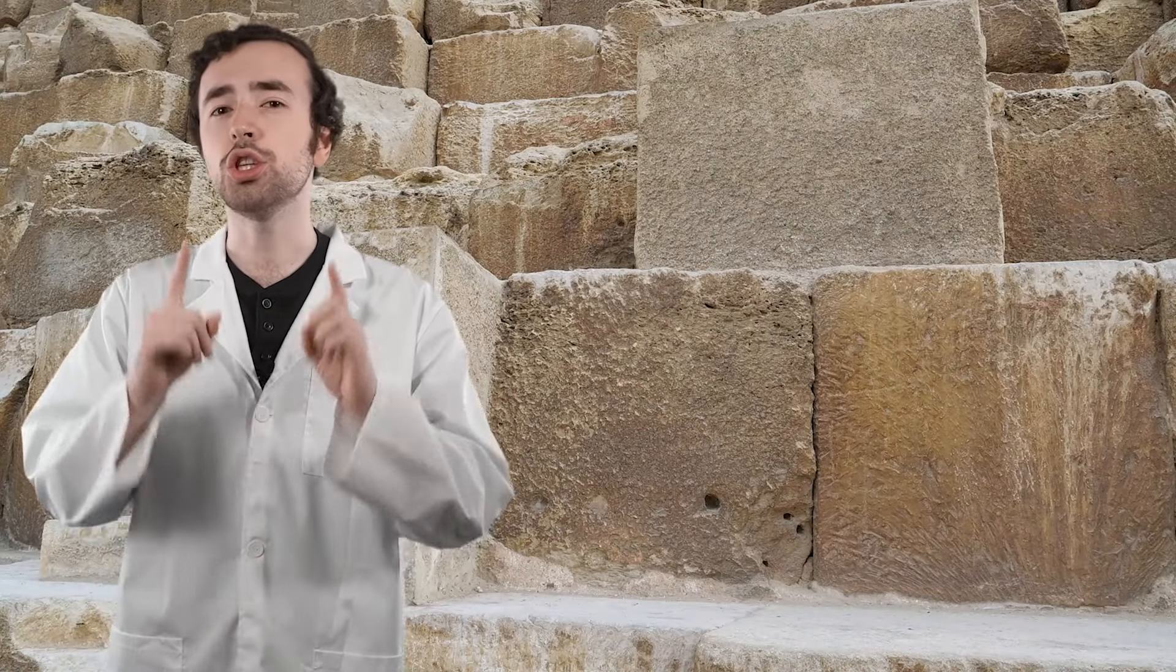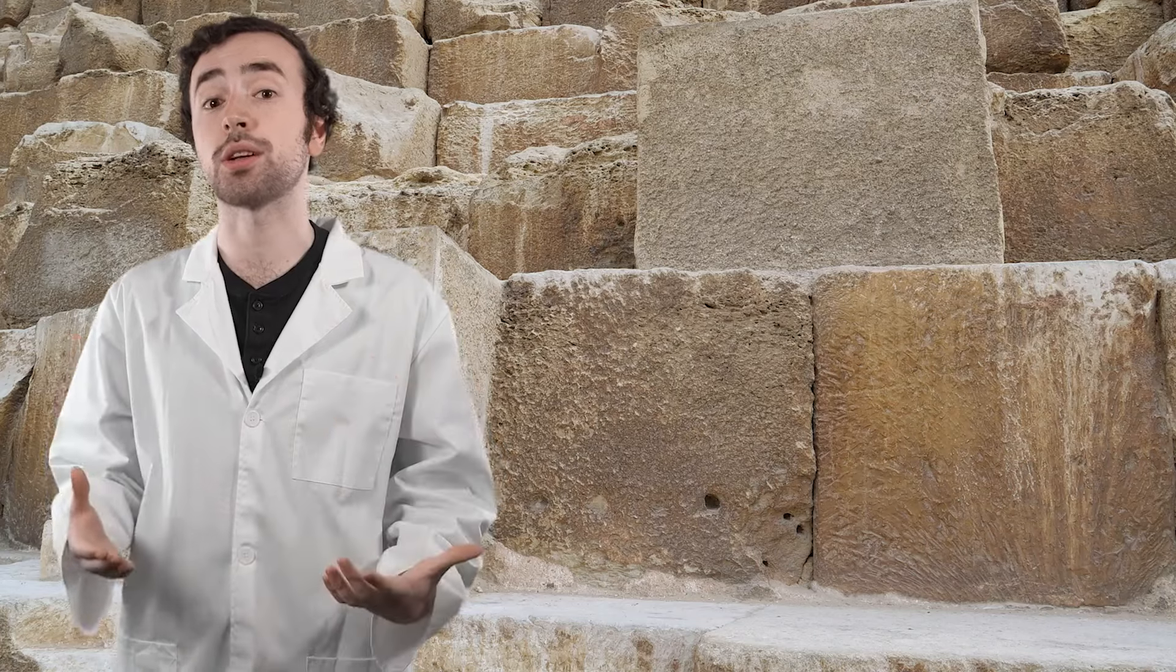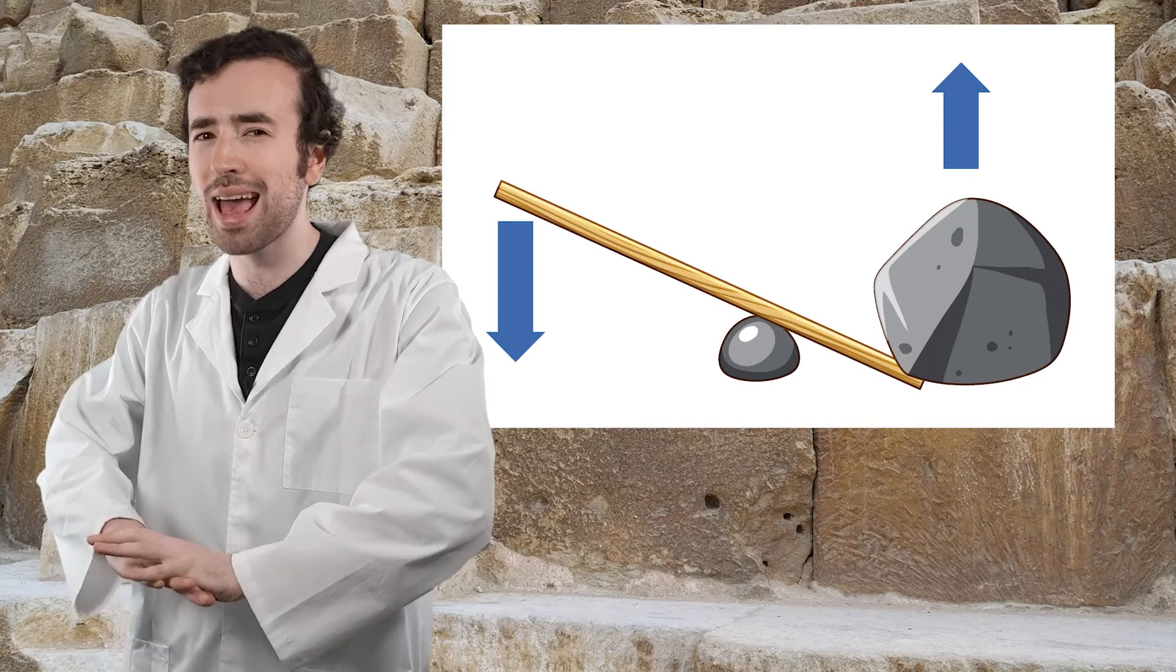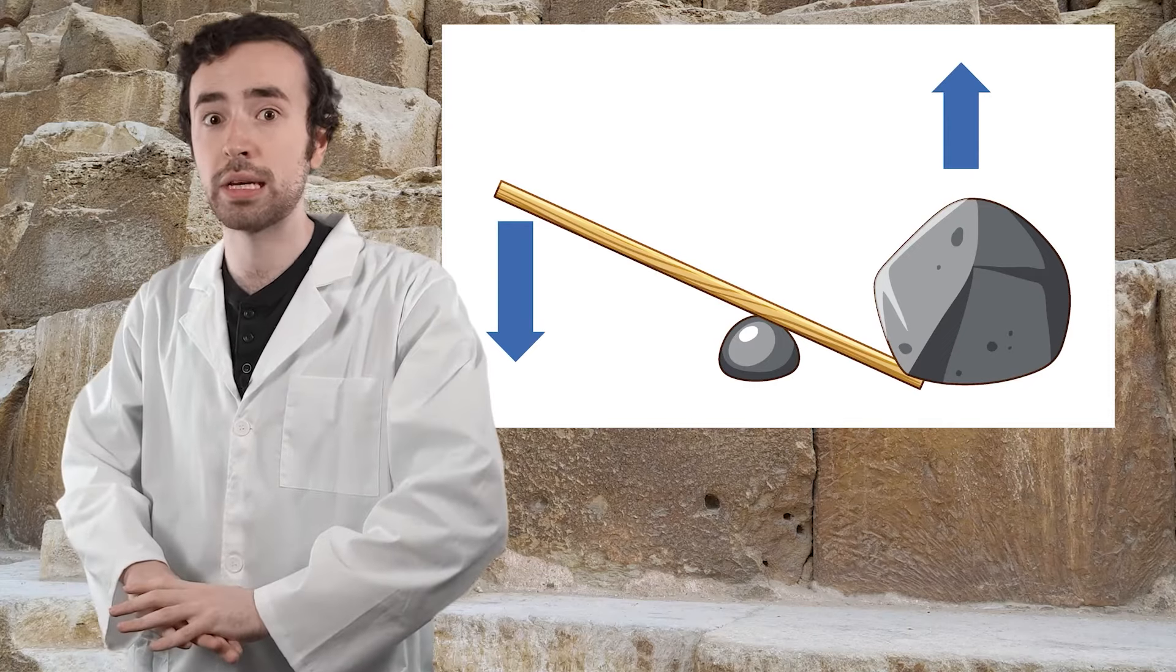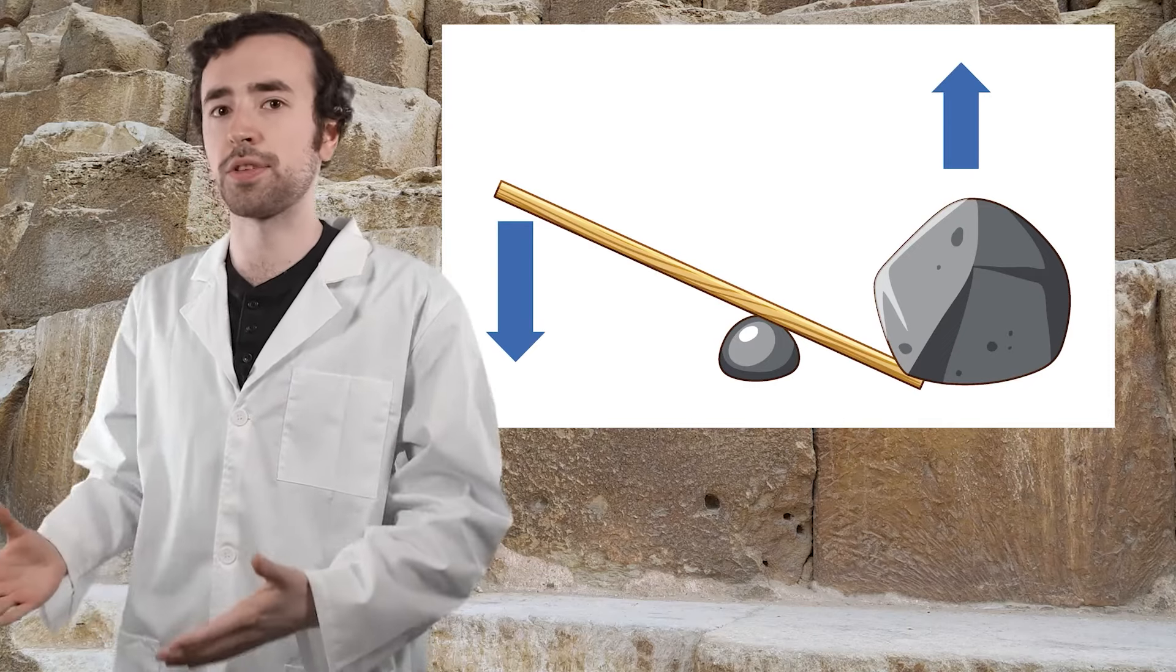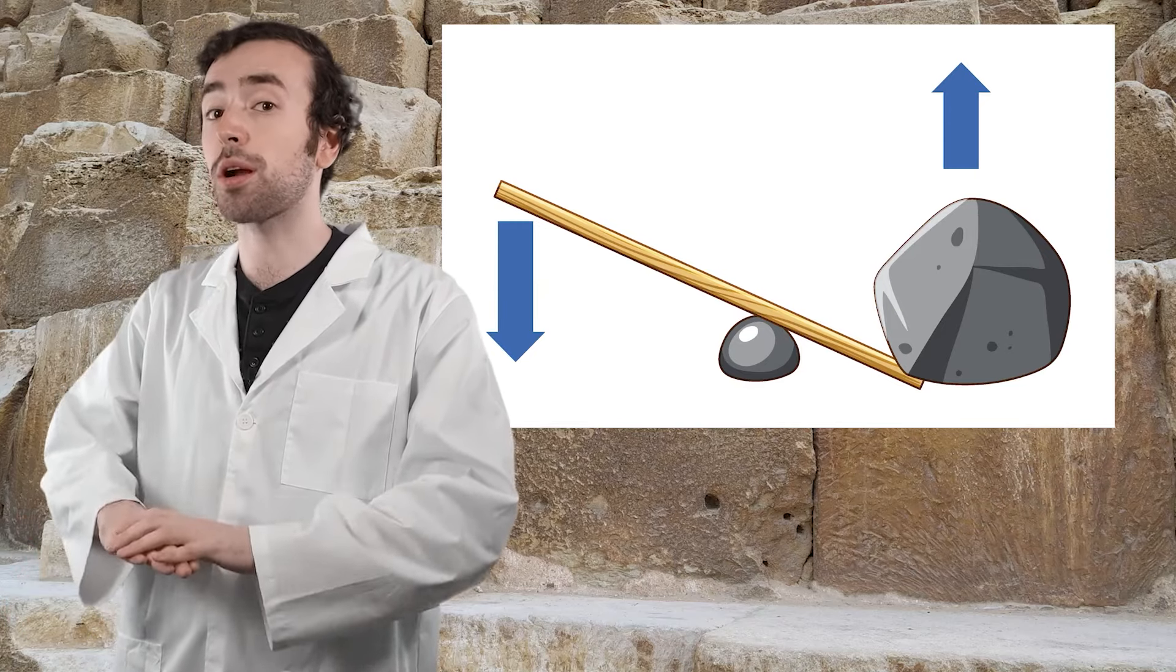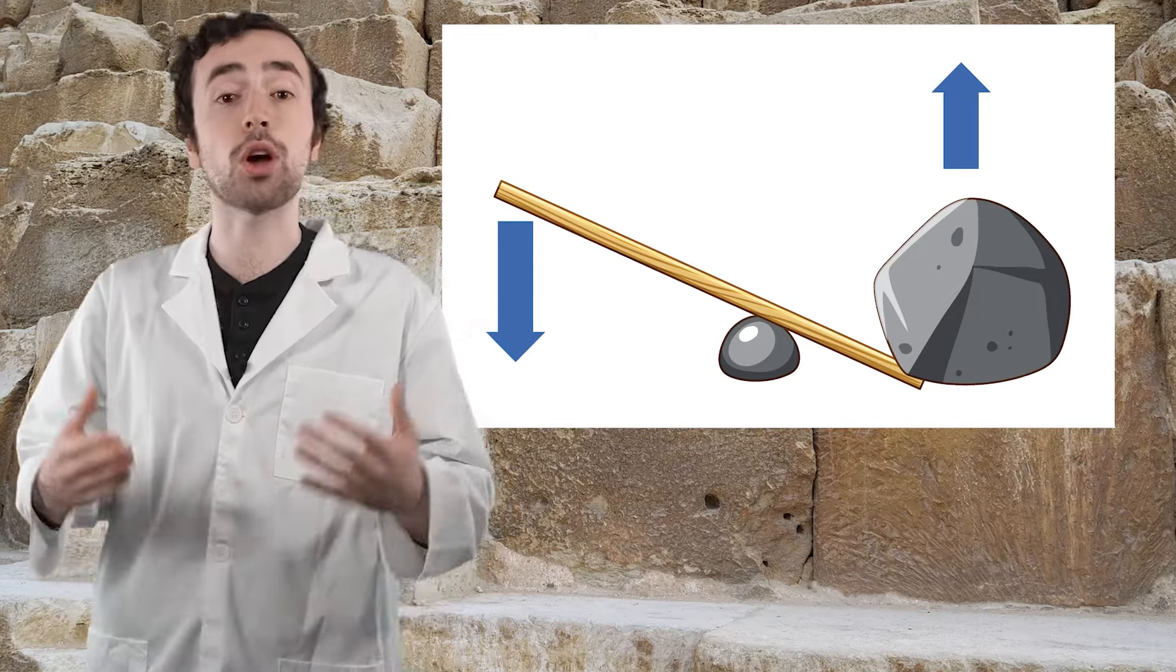Archaeologists have determined that the ancient Egyptians used levers when they were constructing the great pyramids. They used levers to pry the heavy stones out of the ground. There's no way they could have lifted them themselves, but the levers made the work much easier. The Egyptians also used other simple machines like wedges and pulleys to transport and lift the stones when they were building the pyramids, but we'll learn more about that in future lessons.